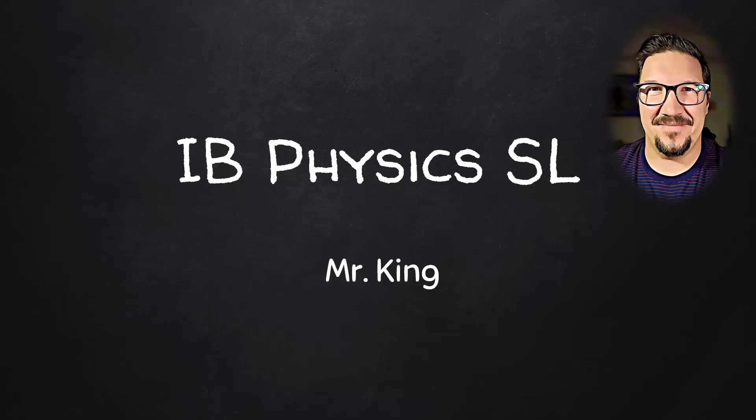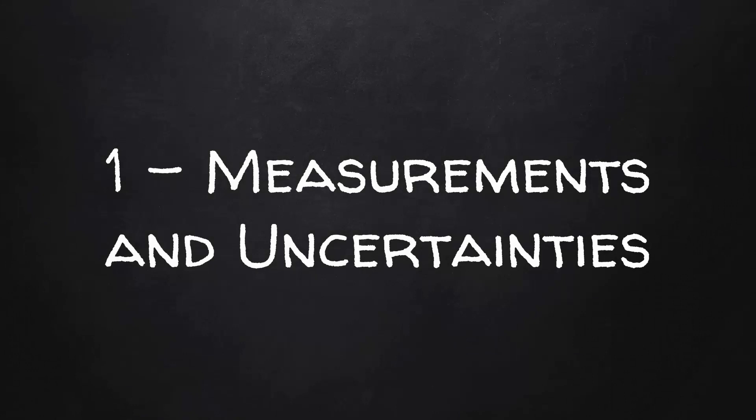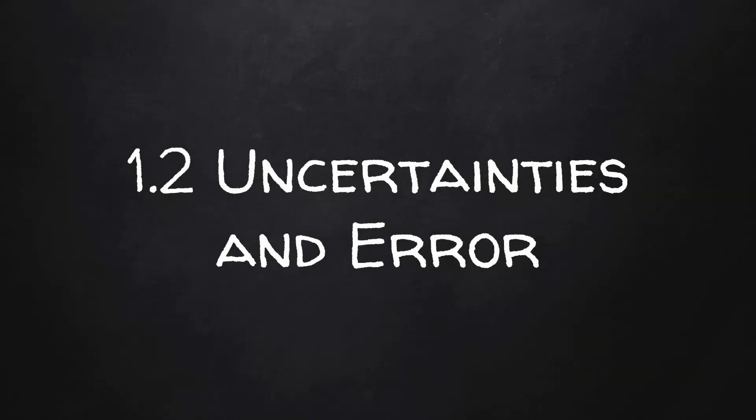This is IB Physics SL. I am Mr. King. Topic 1: Measurements and Uncertainties, Section 1.2: Uncertainties and Error.